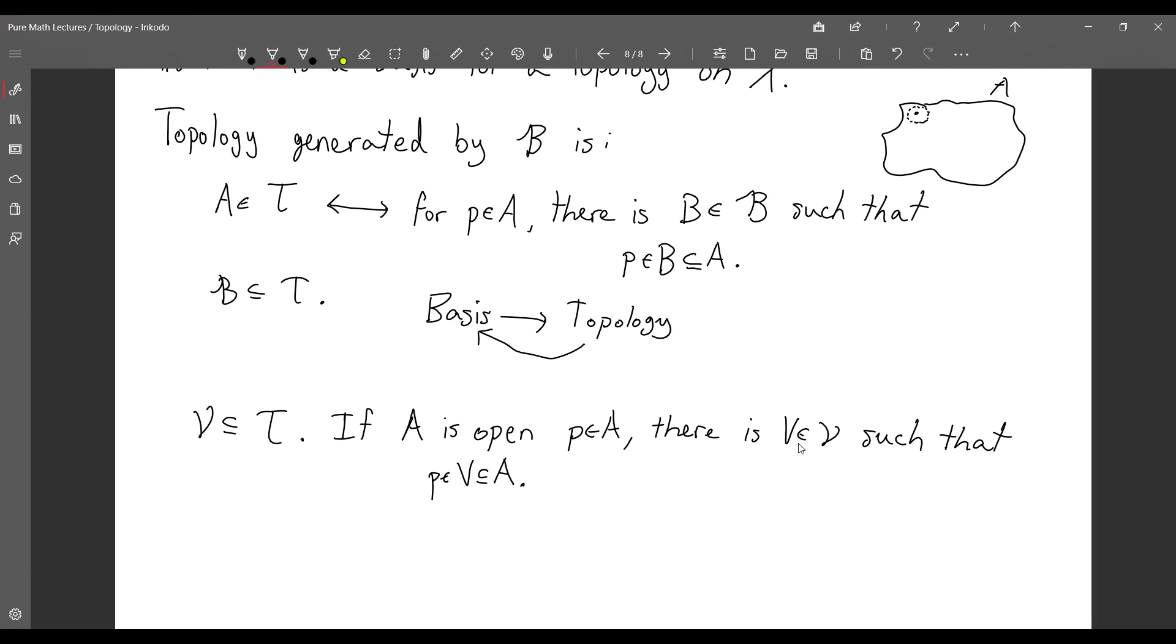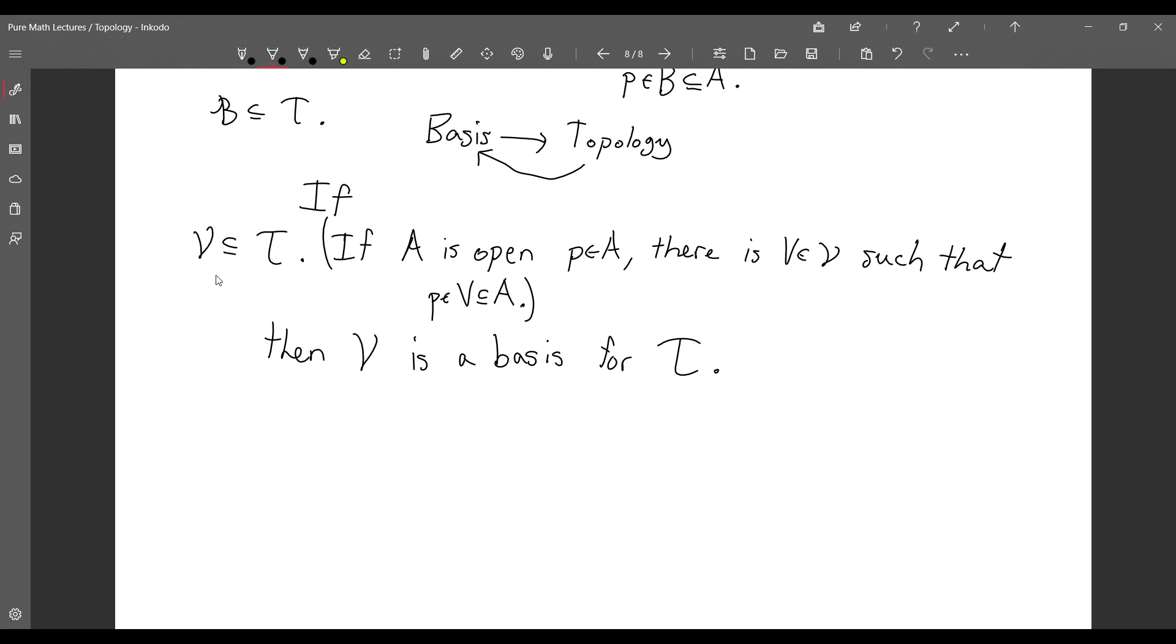Let's say we have script V as a subset of a topology. If A is open and P is an element of the open set, then there is V such that P is contained in V which is contained in A. If this statement is true, then V is a basis for the topology that we have, T.